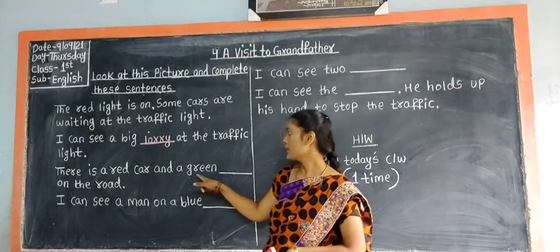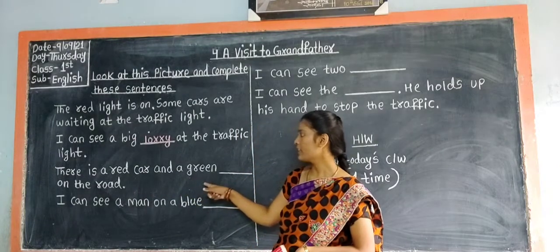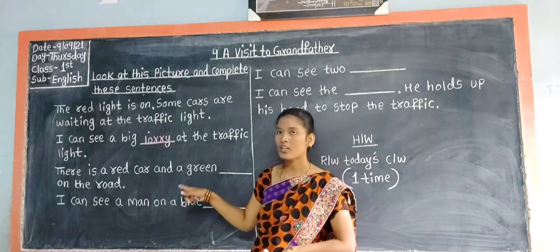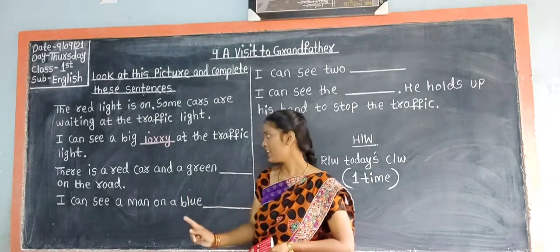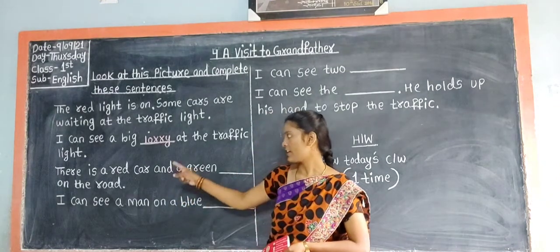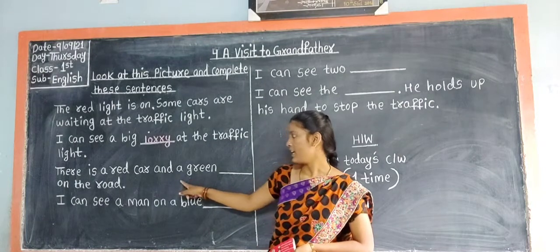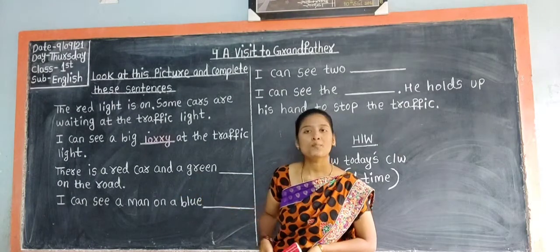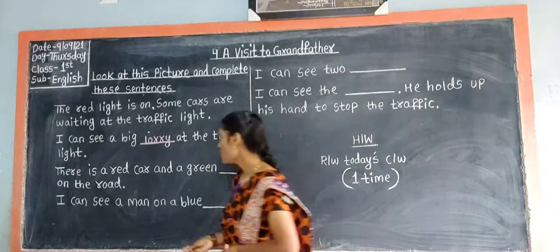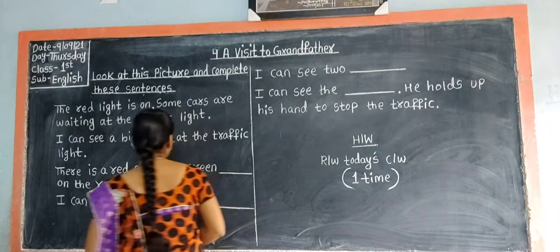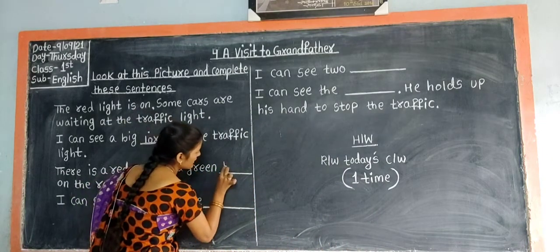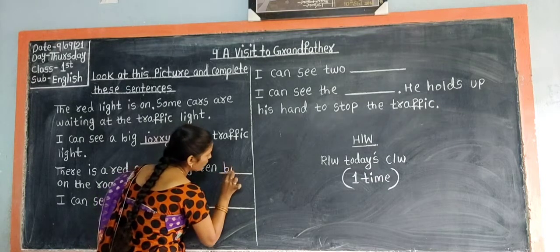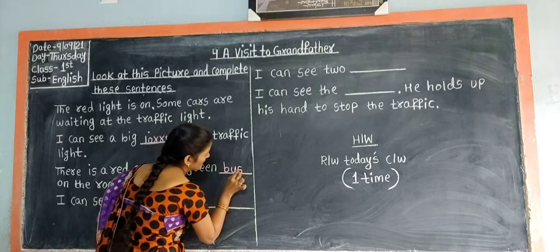'There is a red car and a green ___ on the road.' What you can see in the picture children? You can see a red car and a green bus. So write 'bus' in the blank. B-U-S. Bus.